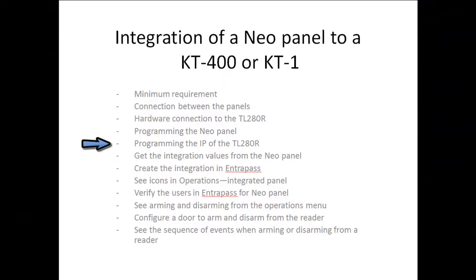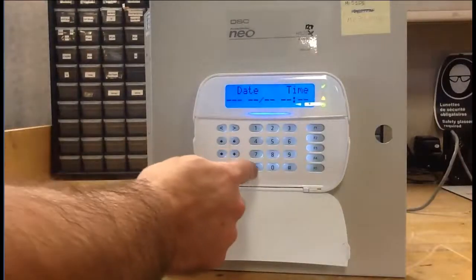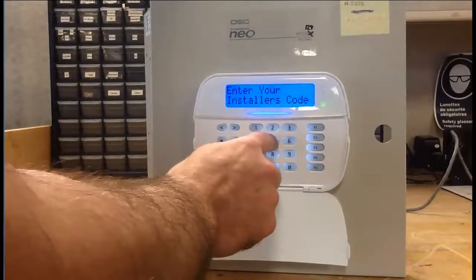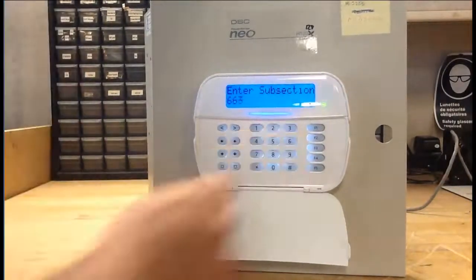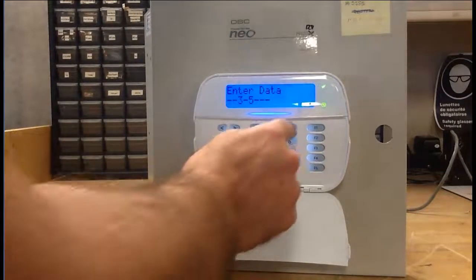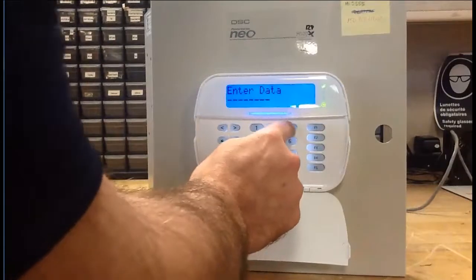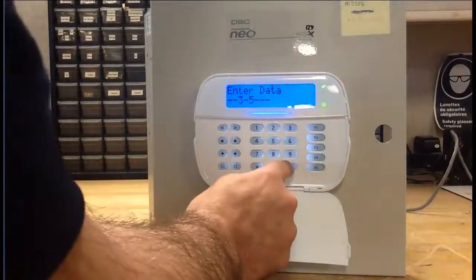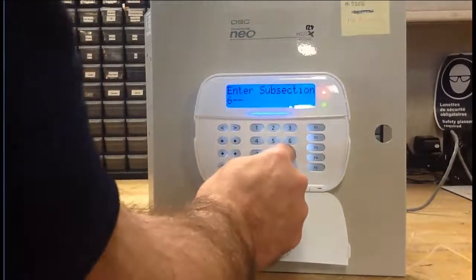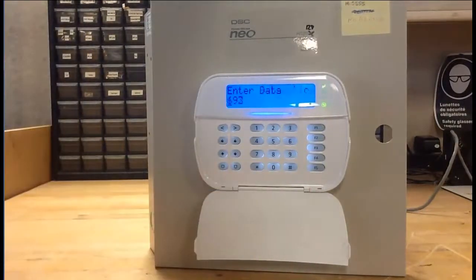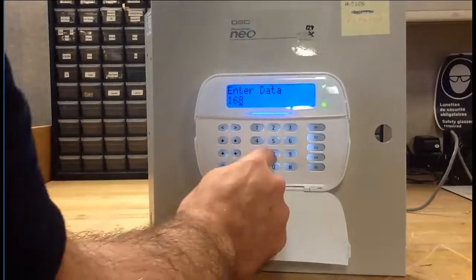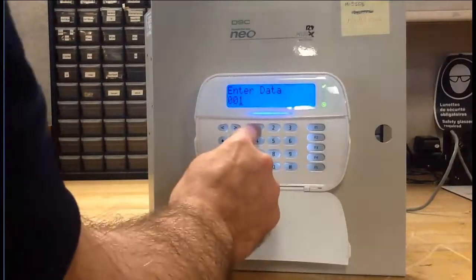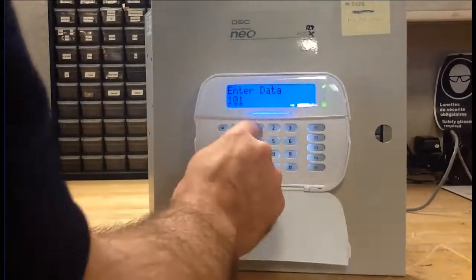Now we're programming the IP of the TL280, but it's actually the IP address of the KT400 that you will use. We will go to subsection 851 and then 663. We'll want to make sure that number 3 and number 5 are activated — you can toggle them by pressing the numbers. Then we will go to subsection 693, and that's where you will enter the IP address of the KT400 or the KT1. This is why you need a static IP address, because it's hard-coded in the NeoPanel.